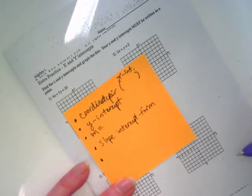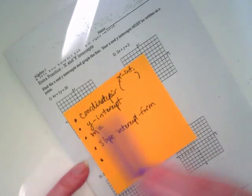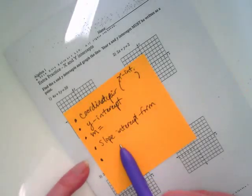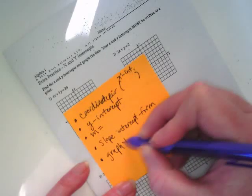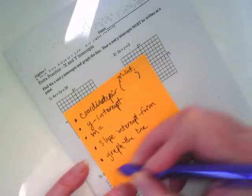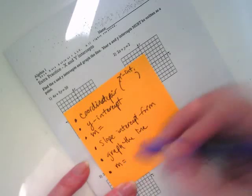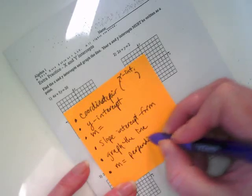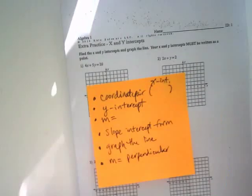This is for each of these problems. There's going to be a total of six things that you have to do. So coordinate pair for x-intercept, coordinate pair for y-intercept, slope, finding the slope-intercept form equation. We're going to graph the line. And finally, you're going to tell me the slope for its perpendicular equation or perpendicular line.